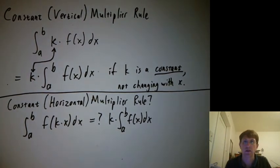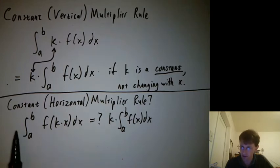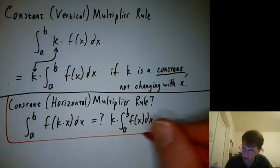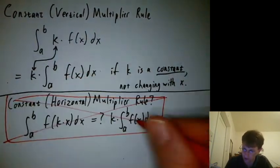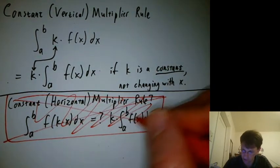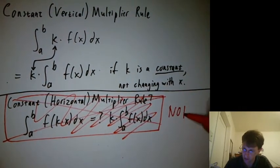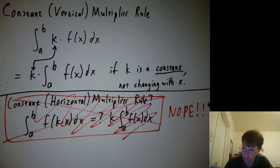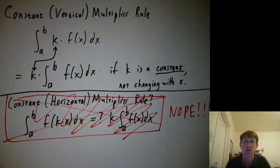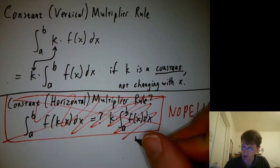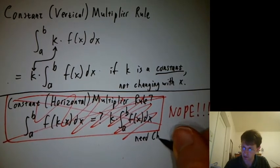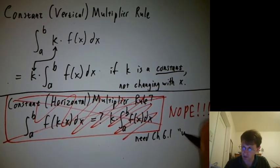The answer, we would like it to be yes. The answer is actually not just no, but draw a red box around it, cross it out, and maybe do some scribbling and say nope. So what do we do if we have a constant horizontal multiplier? We need chapter 6.1, which is called u-substitution.